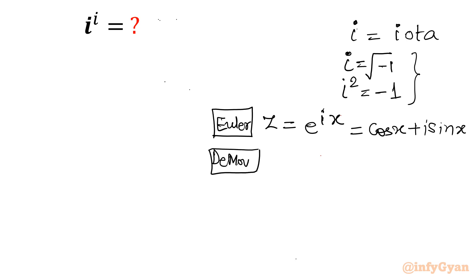And second point is De Moivre's theorem. What is that theorem? Cos x plus i sin x, if it is having power n, then we can write cos nx plus i sin nx. So let's start.